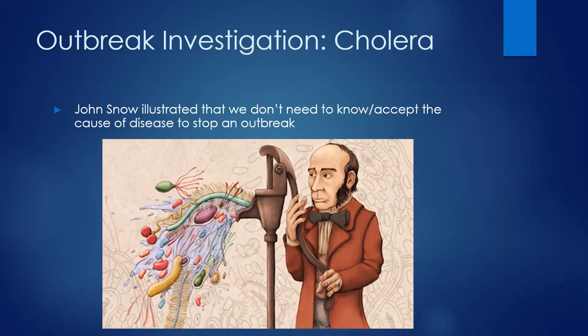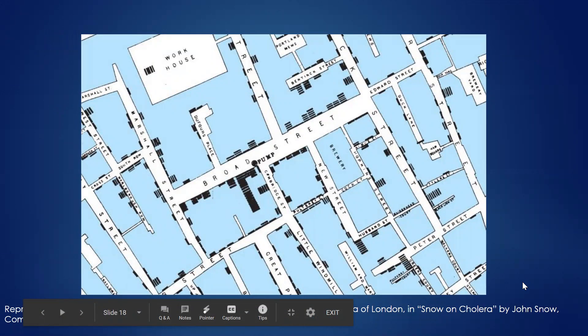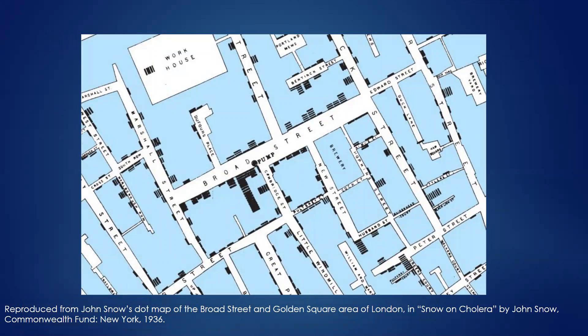Sometimes we can stop outbreaks without knowing exactly what caused them. The classic example is John Snow, who famously broke the pump handle off the Broad Street pump to stop the cholera outbreak in London. At the time, we didn't know that there was an infectious agent — Vibrio cholerae — causing people to get sick. But he was able to map the cases of disease and link them back to this shared exposure at that water pump. So don't be too concerned if you don't have the tools to do a full diagnostic investigation or high-powered testing — you can still use these epidemiological strategies to identify potential causal agents and develop an intervention strategy to stop the outbreak.